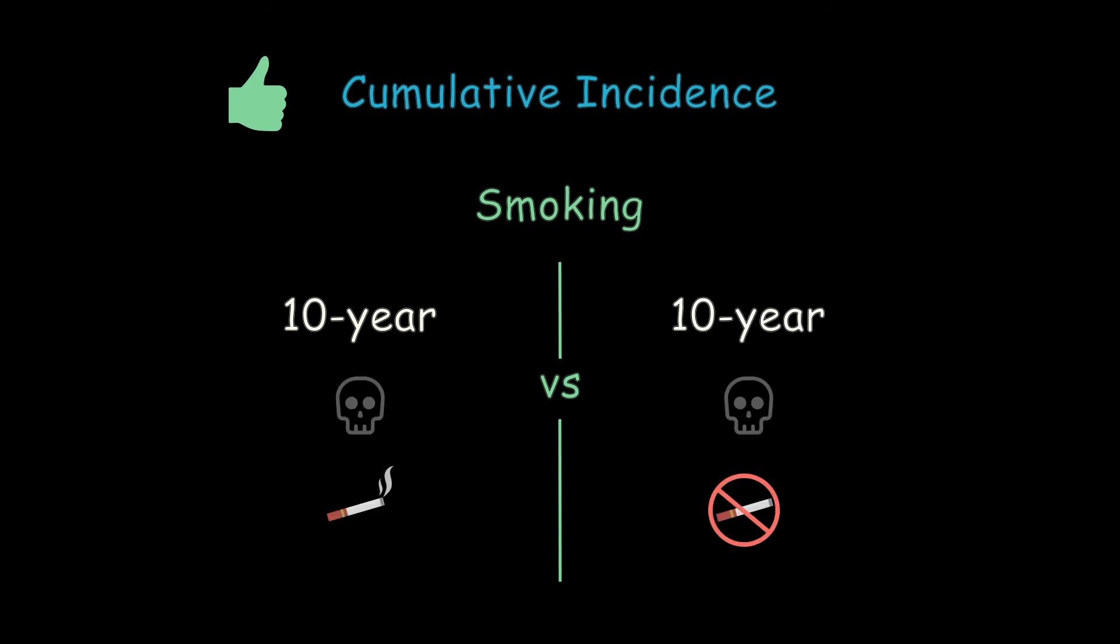Cumulative incidence is useful for evaluating the effect of an exposure, such as smoking, by comparing the 10-year cumulative incidence of death for smokers versus the 10-year cumulative incidence of death for non-smokers.